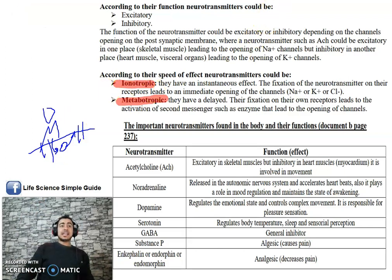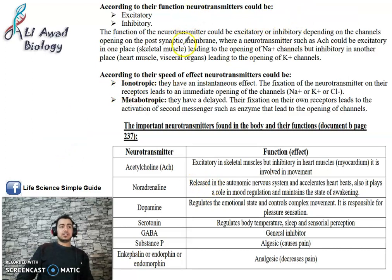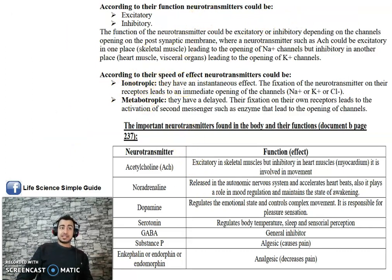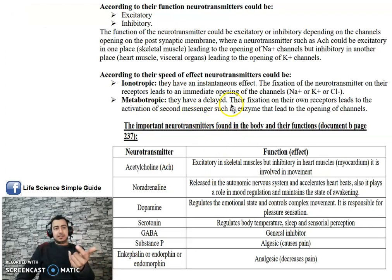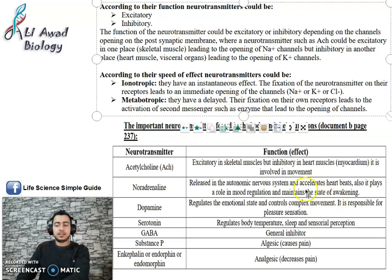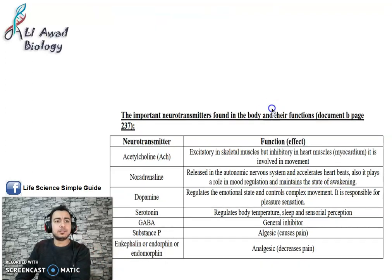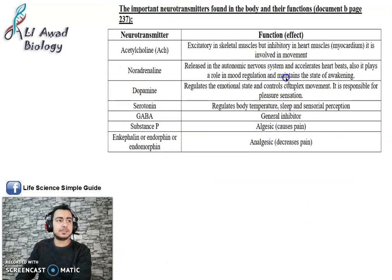That's all about the types of neurotransmitters. Now let's talk about the names of neurotransmitters — the specific names of neurotransmitters we need to know.